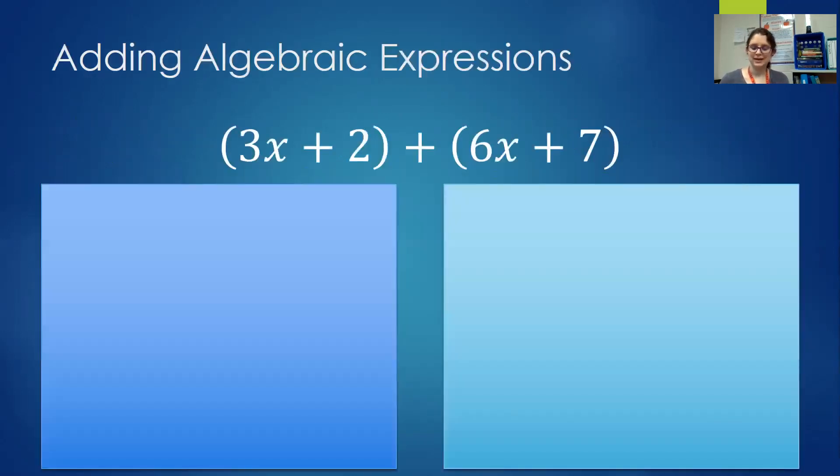Today we're looking at adding algebraic expressions, and this is very similar to simplifying algebraic expressions, it's just set up in a different manner. When we simplified algebraic expressions we grouped the different terms together. So the 3x would be grouped with the 6x and the plus 2 would be grouped with the plus 7 so that we could get 9x plus 9.